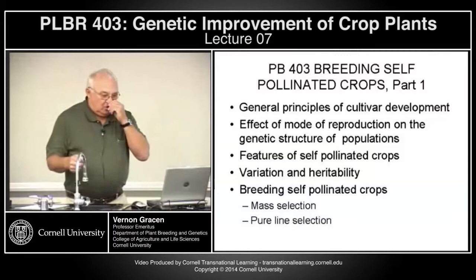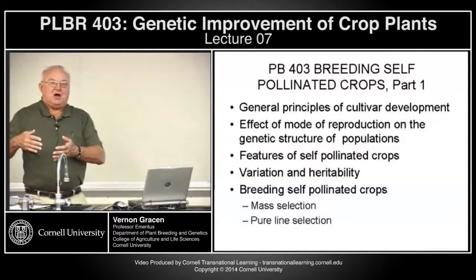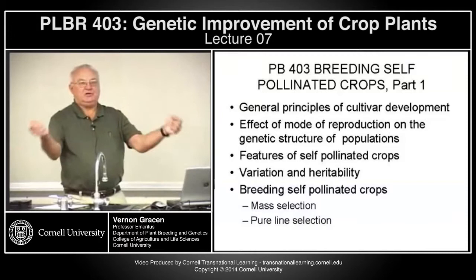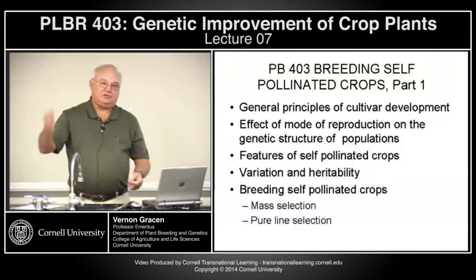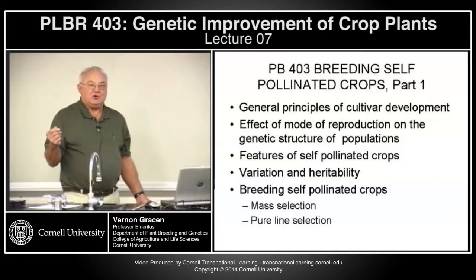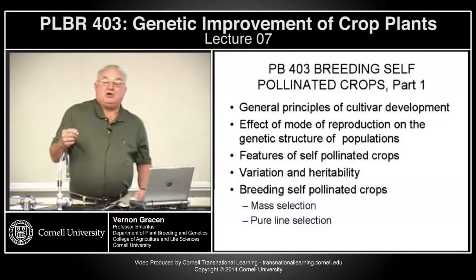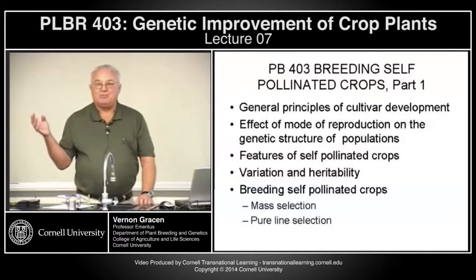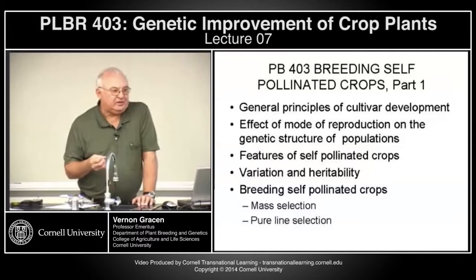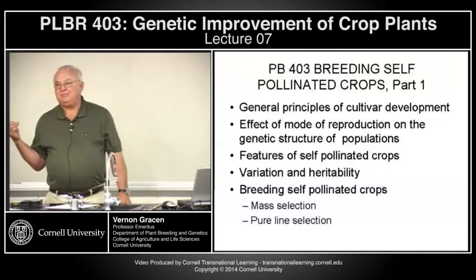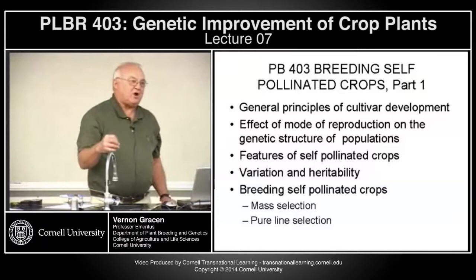On Friday, we'll continue with self-pollinated crops, talking more about what's done today, where most self-pollinated crop breeders make hybrids and generate F2 generations to get variation, then use various breeding methods to select for that newly generated, superior germplasm. On Monday, we'll talk about breeding cross-pollinated crops as synthetic or open-pollinated varieties, discussing inbreeding depression and the mechanism to remove those problems by heterosis. Then next Friday, we'll talk about breeding hybrids.